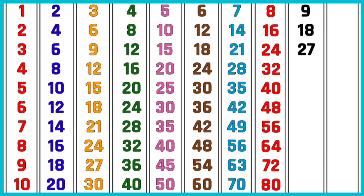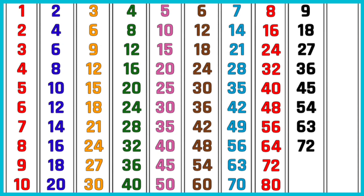9 threes are 27. 9 fours are 36. 9 fives are 45. 9 sixes are 54. 9 sevens are 63. 9 eights are 72. 9 nines are 81. 9 tens are 90. Table of 10.